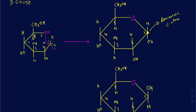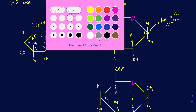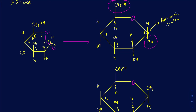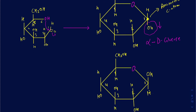If your OH is pointed down, the way you tell whether it's alpha or beta is by reference to your CH2OH. Those are the two groups you look at when figuring out whether you have an alpha or beta anomer. If they are trans to one another — OH pointed down and CH2OH pointed up — then you call that the alpha anomer. So this is alpha D-glucose. On the other structure, if the OH and CH2OH are both pointed in the same direction — cis to one another — that's going to be your beta anomer, beta D-glucose.